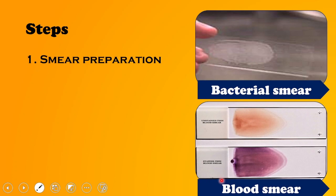Looking at the images: the first image shows an unstained thin blood smear, and the second image shows a stained smear — the kind we have previously encountered in DLC.